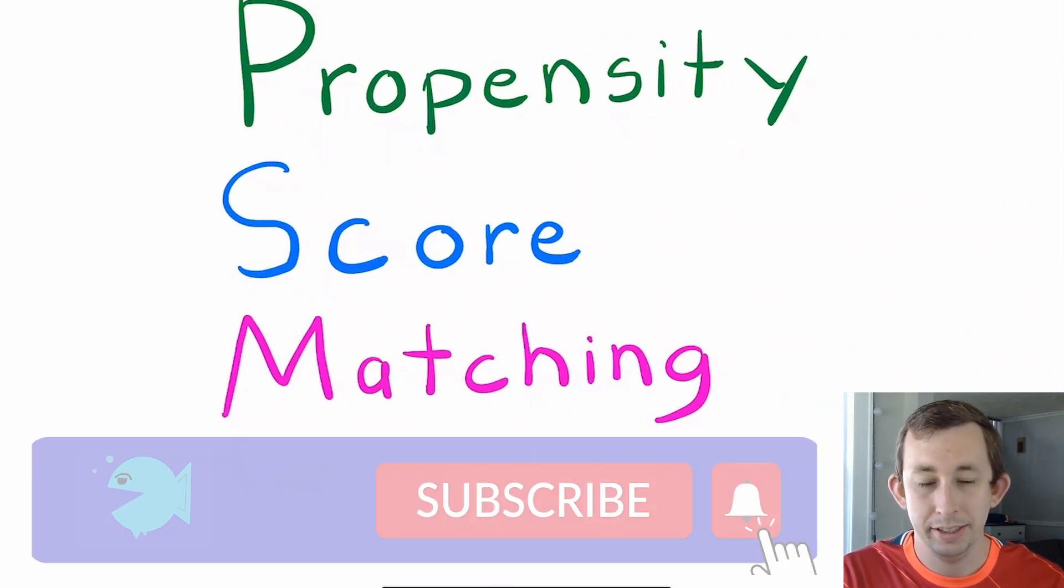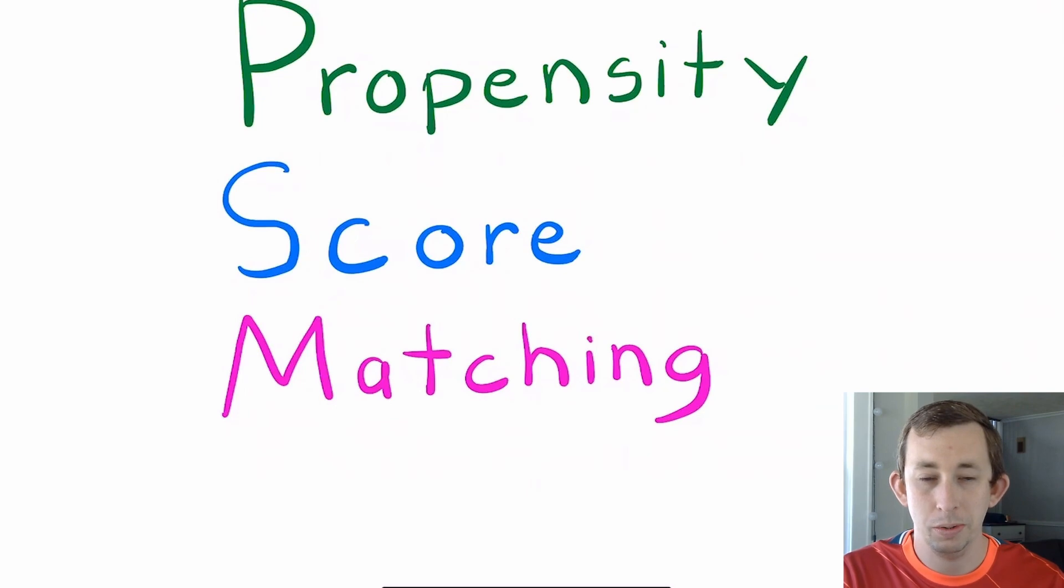The idea behind propensity score matching is you have a treatment group, you have a control group, and you are trying to construct the best counterfactual for each person in your treatment group. How are we going to do that?